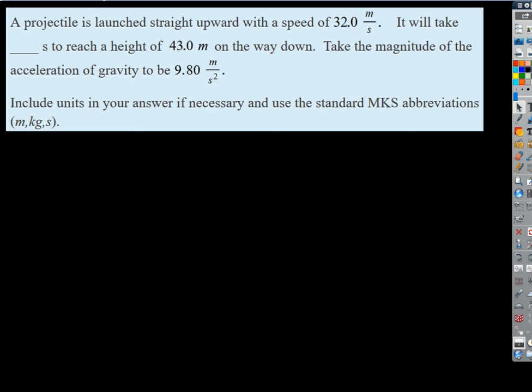So if we know we've got a projectile launched straight upward with a speed of 32, let's just write down the stuff that we know. So this is all vertical. The initial velocity is positive, it's going up 32.0 standard units. We know it reaches a height of 43 meters, right? So that's going to be the highest.